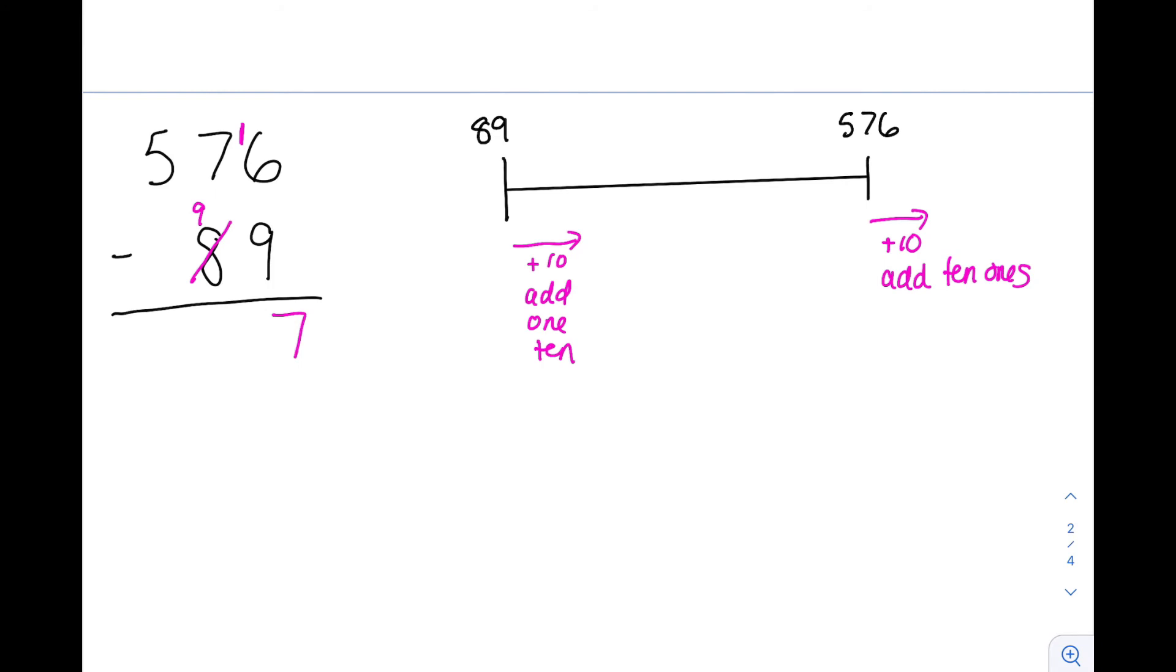Coming to the tens place, we want to go from 7 to 17. So we're adding 10 tens. We shift our number by adding 10 tens. Adding 10 tens is the same as adding 100. So we shift our subtrahend to the right by 100 units by adding 100. 100 right there. And now I can go ahead and subtract. 17 minus 9 is 8. And finally, 5 minus 1 is 4. 487.